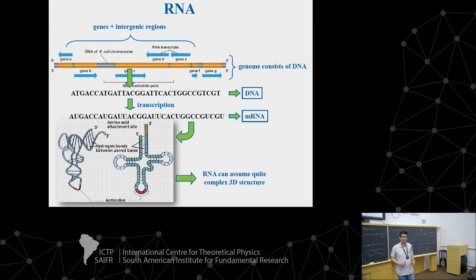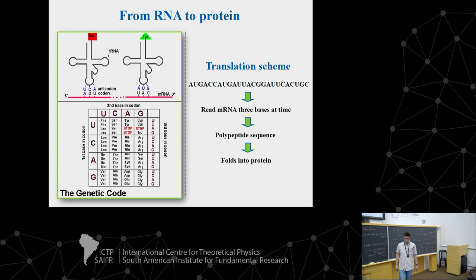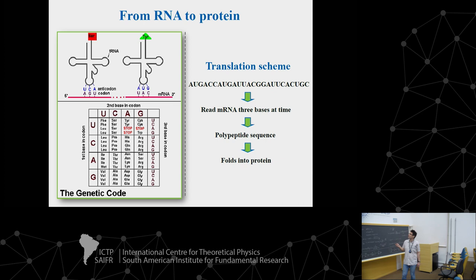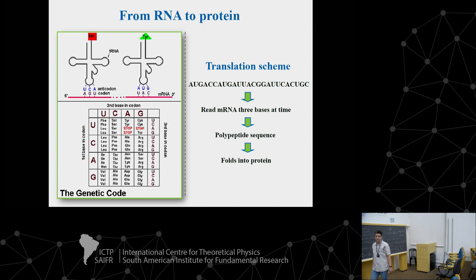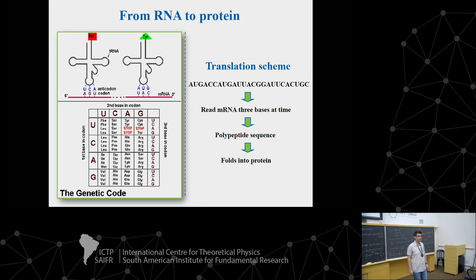There are bioinformatics methods that predict secondary structure of RNA. For translation, we start from the start codon and end with the stop codon, reading DNA as triplets — three bases of messenger RNA determine the amino acid. This gives a polypeptide sequence that then folds into protein. Proteins do most of the work in the cell: catalyzing chemical reactions as enzymes, structural properties, molecular motors, and so on.